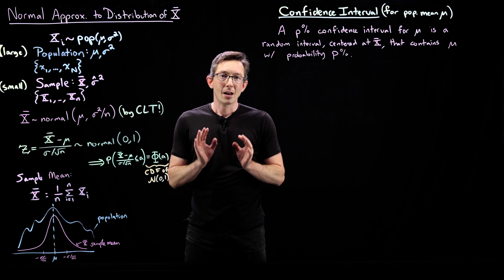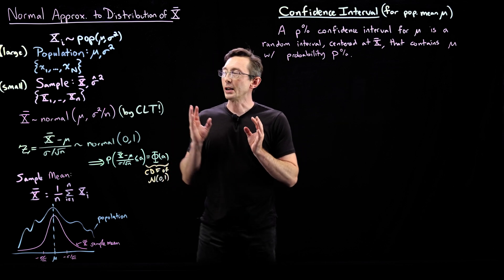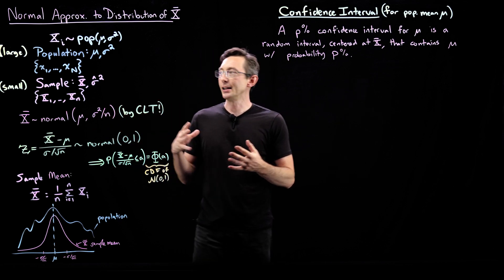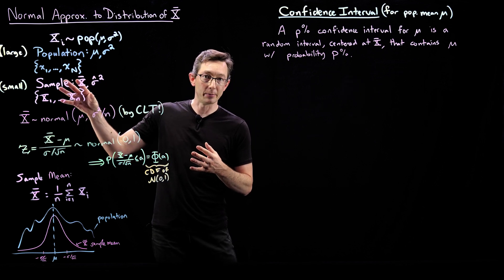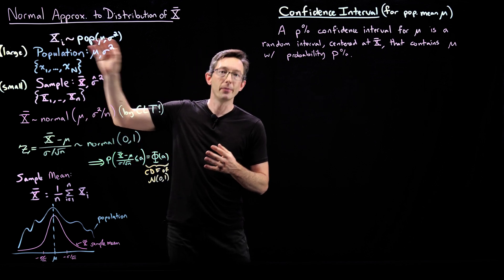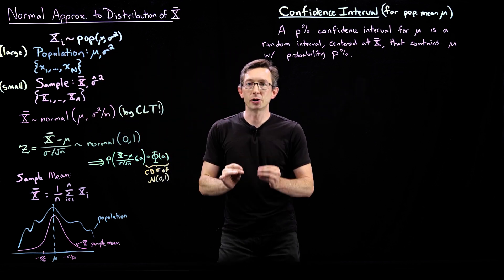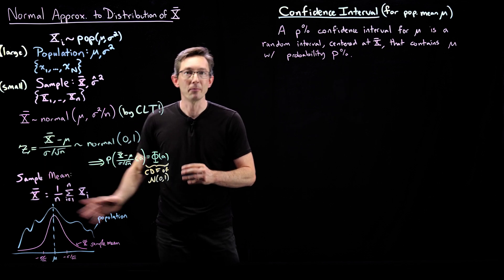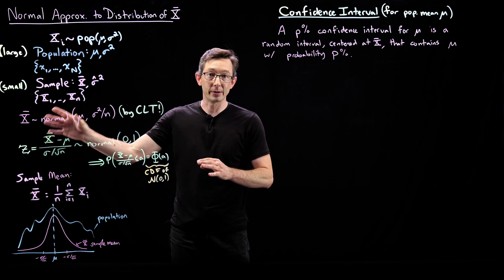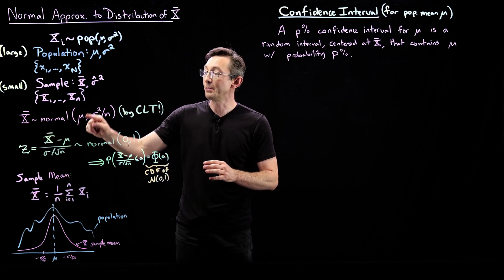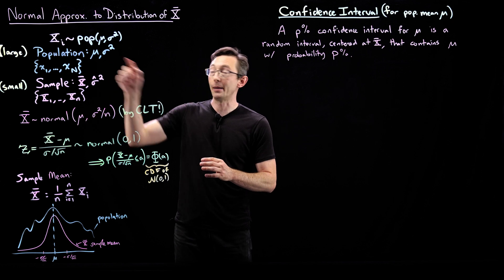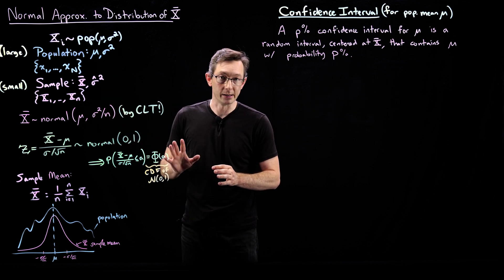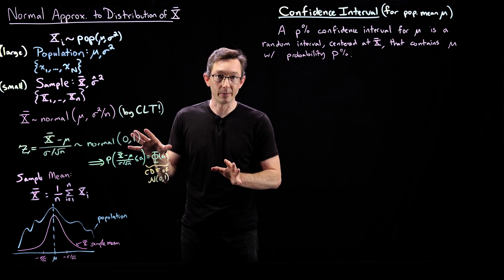Welcome back. In the last few lectures, we've introduced the idea of a random sample of a larger population, and we've shown that the sample mean x-bar is a normally distributed random variable whose mean is the population mean, and it has its own variance. This is by the central limit theorem.